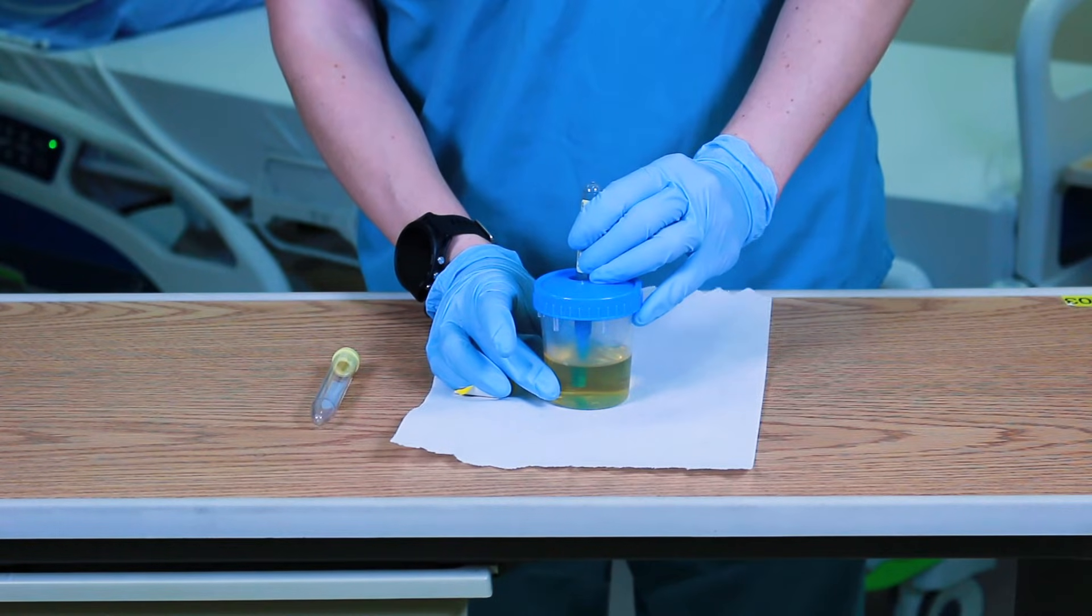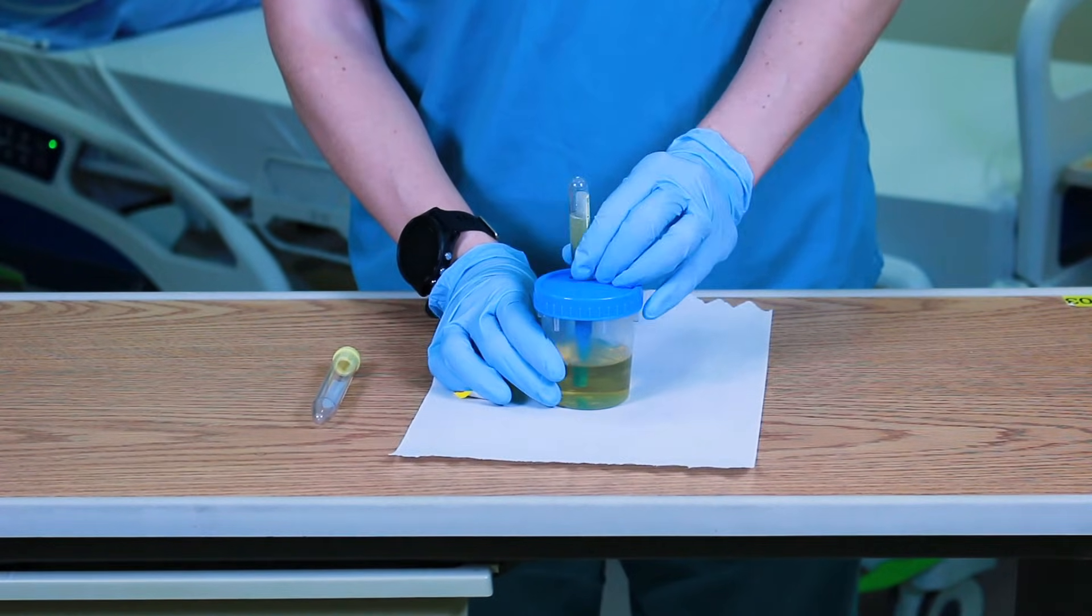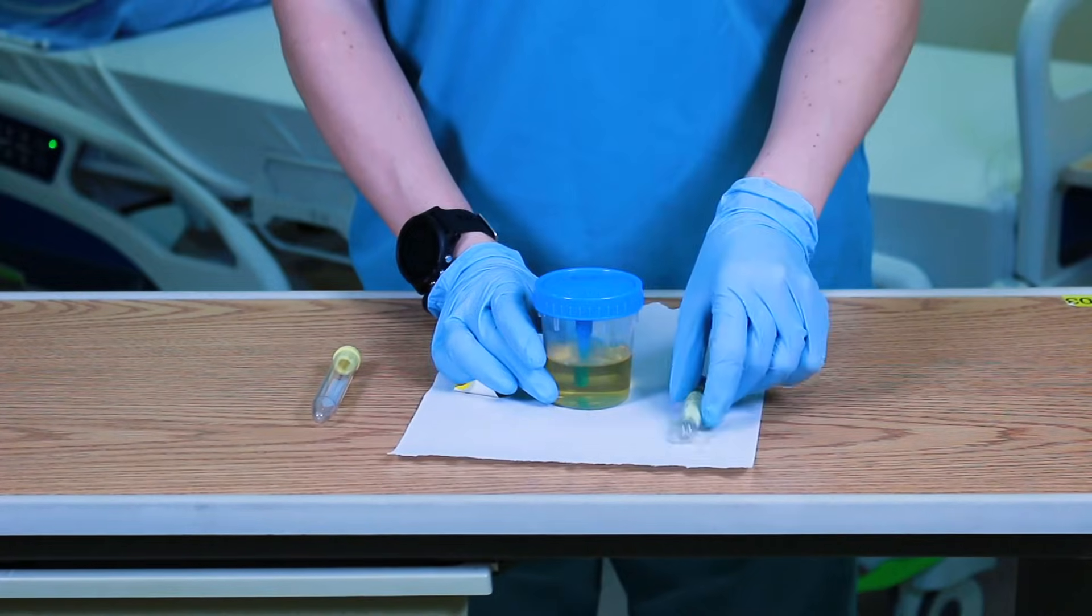Negative pressure will allow the urine to flow into your collection tube. If there is a preservative, invert the tube 8-10 times to mix.